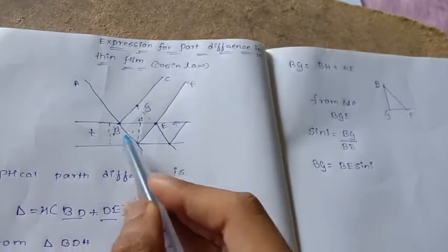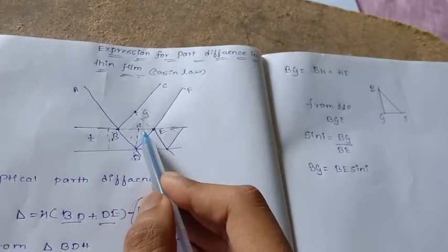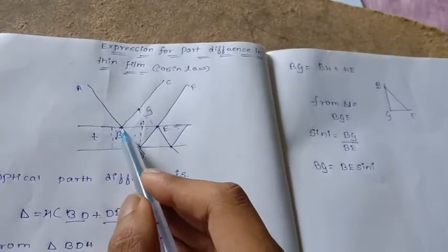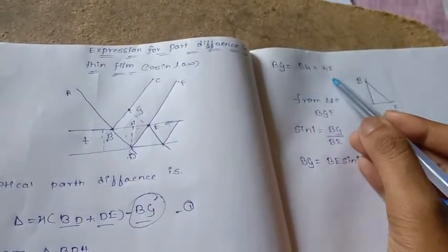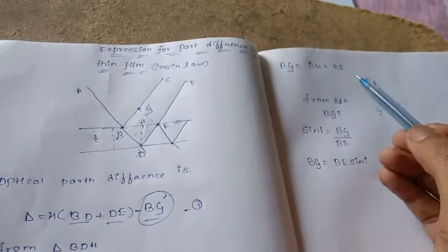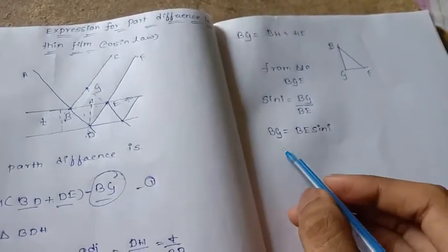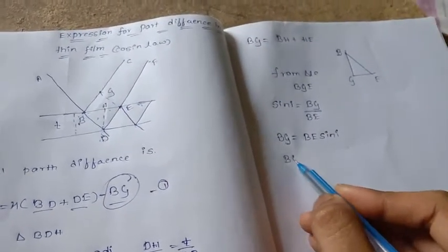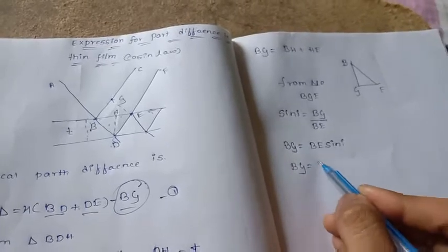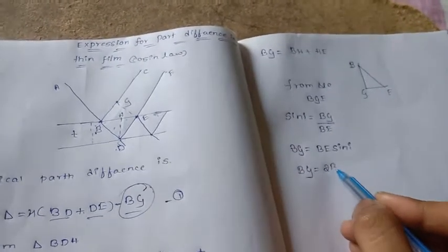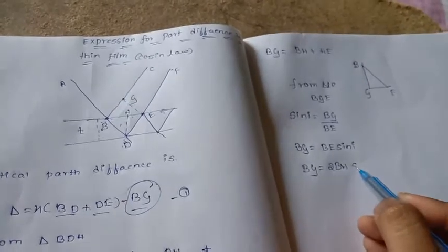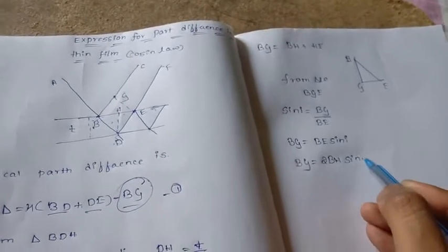BE is nothing but two times of BH, which means BH is also equal to HE. Then we are going to write BG equal to two times of BH sine A.